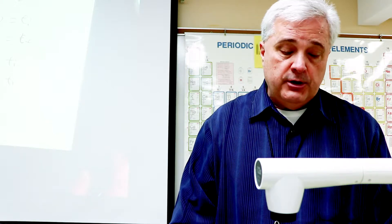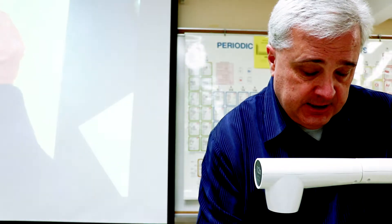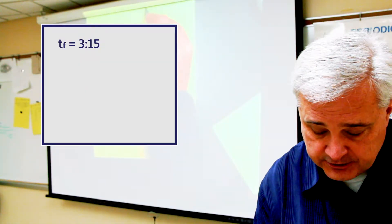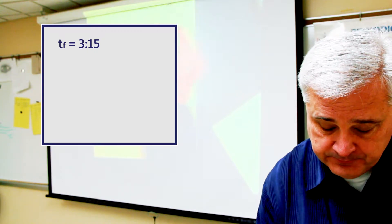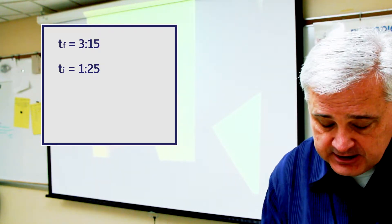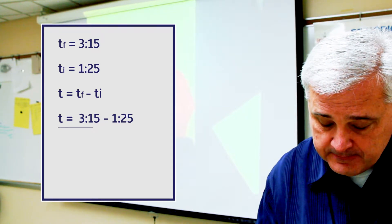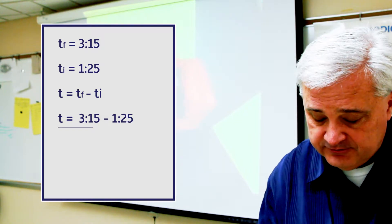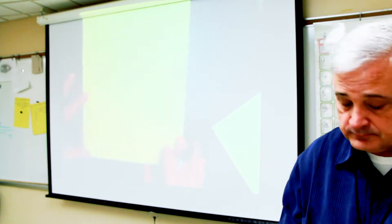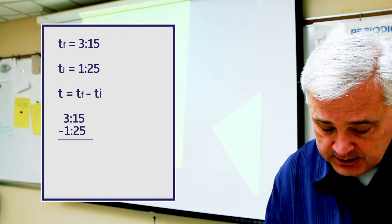Only becomes problematic when you have to borrow in the situation. So that would look like if t sub f was 3:15 and t sub i was 1:25. So then t is equal to the final time 3:15 minus the initial time 1:25. Suddenly it's not as easy as we wish it were. Write this vertically. So you have 3:15 minus 1:25.